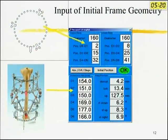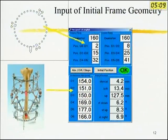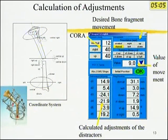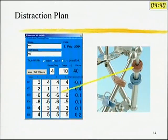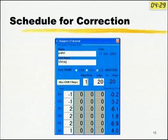The software accepts inputs in terms of where the frame is in 3D space, measured by the lengths of the struts, where the struts are connected, and the size of the rings. You are then able to tell the software where the fulcrum is and what movements you want — angulation in the AP plane, angulation in the lateral plane depending on the X-rays. The software then tells you how much each strut has to be adjusted and gives you a correction schedule — for example, over 10 days, each strut is adjusted by a specific amount. This is what we call the schedule for correction.